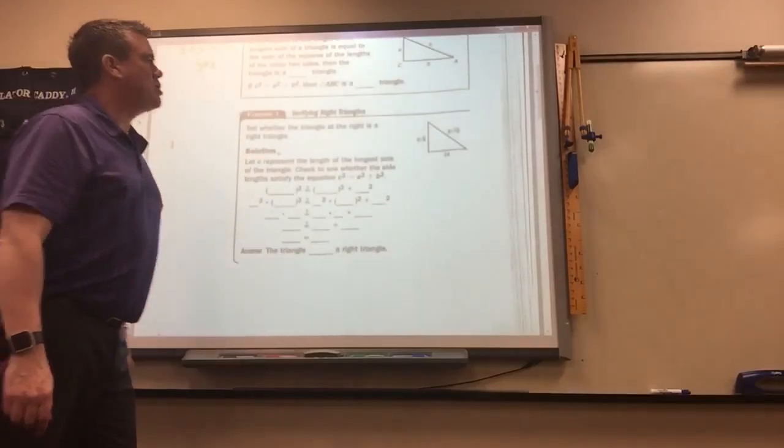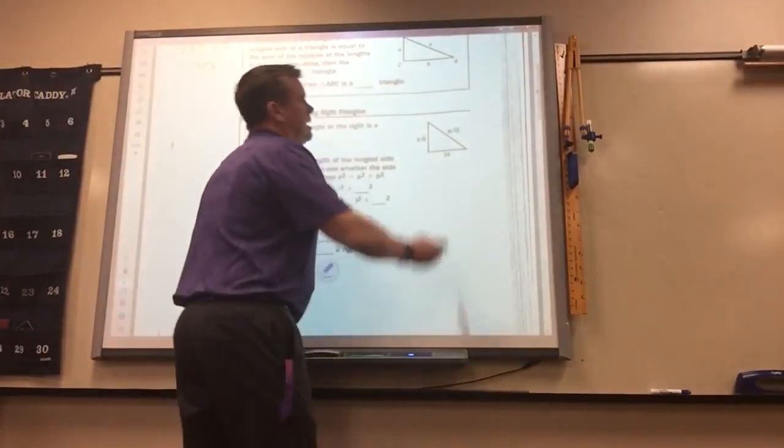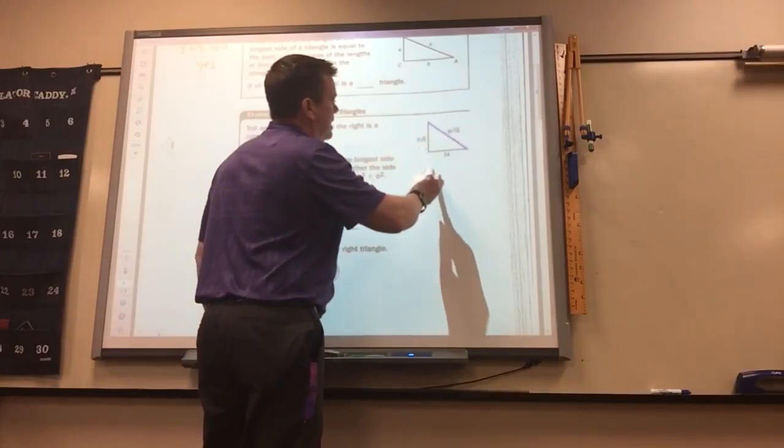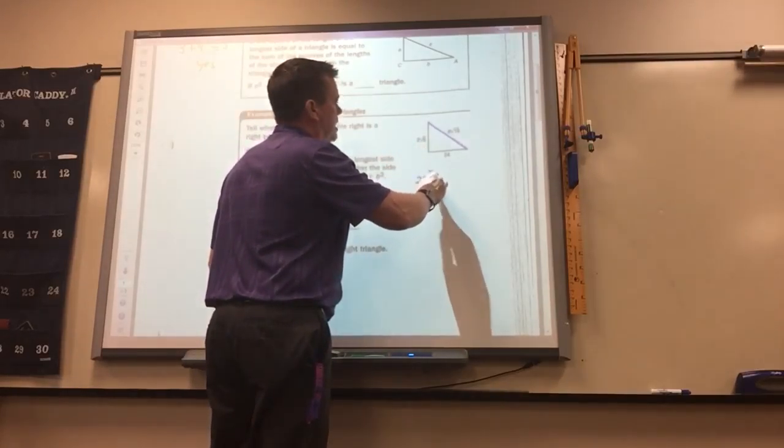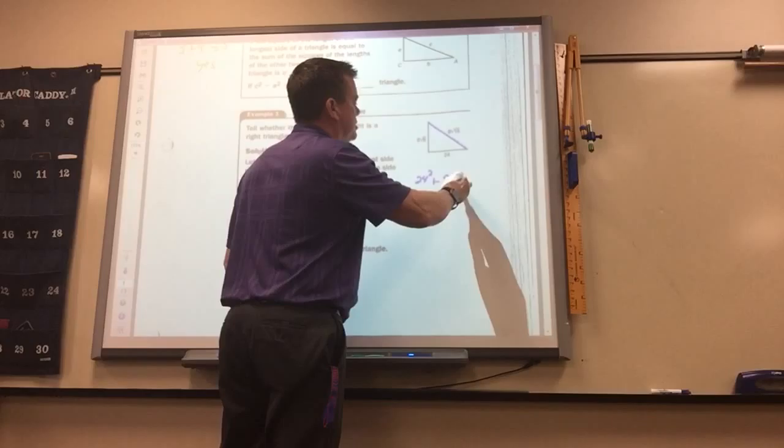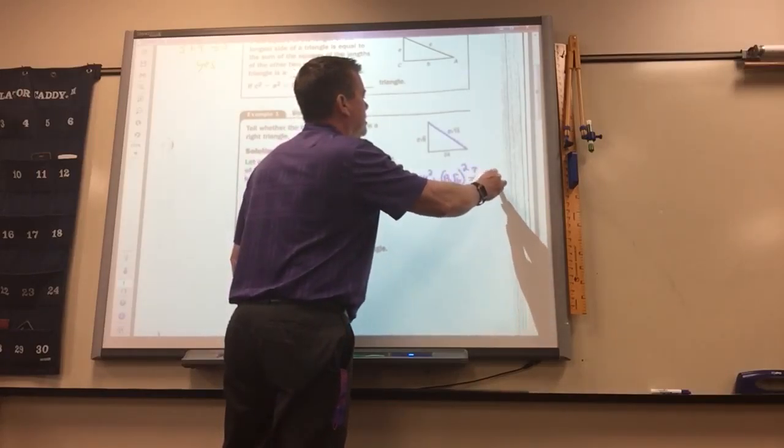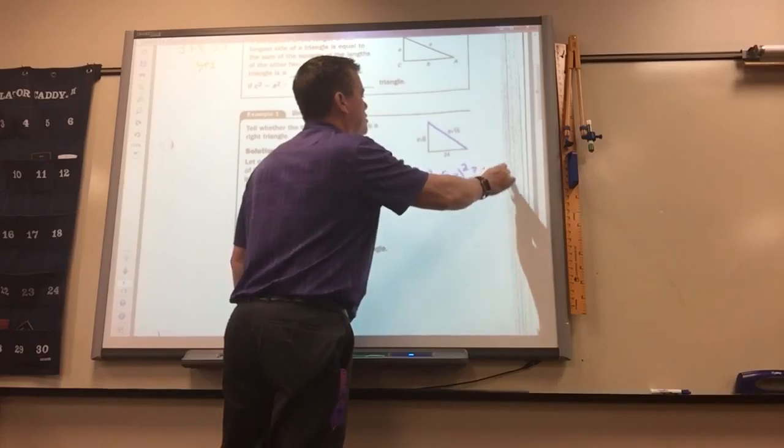Yes or no, yep. So in this one, obviously this would have to be the hypotenuse. So you've got to check, does 24 squared plus 8√6 squared equal 8√15 squared?